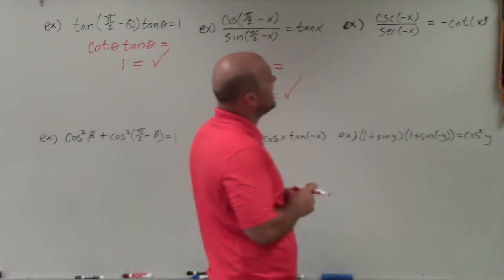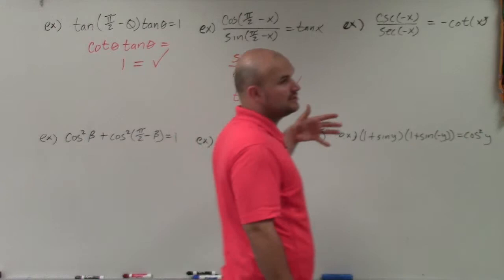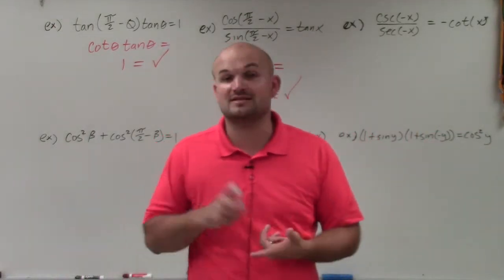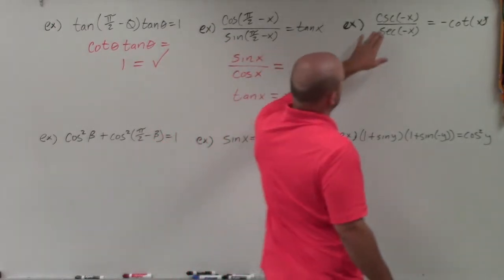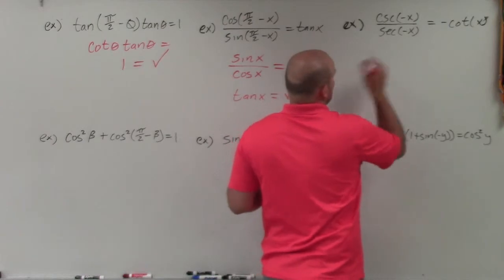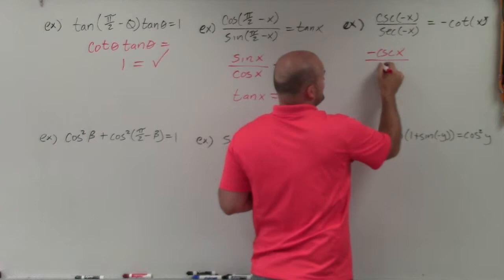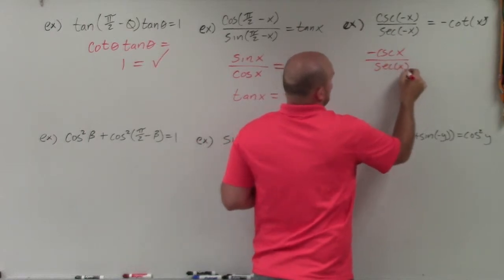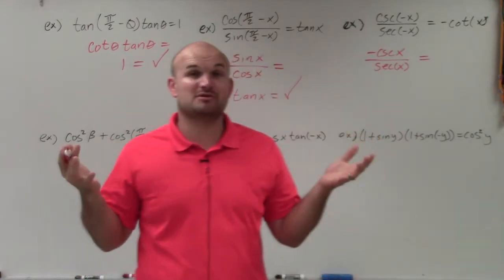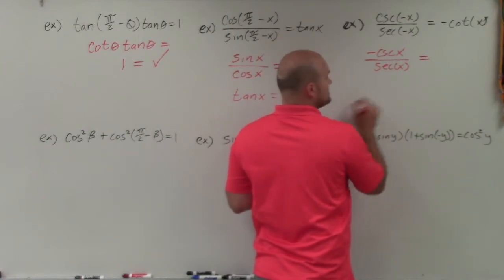Now let's get into the even and odd identities. The even and odd identities determine if we're dealing with an odd or an even function. The only even functions are cosine and secant. So the even and odd identities tell us that cosecant of negative x equals negative cosecant of x, while secant of negative x equals secant of x. To better understand the next example, I'll rewrite it in terms of sines and cosines.